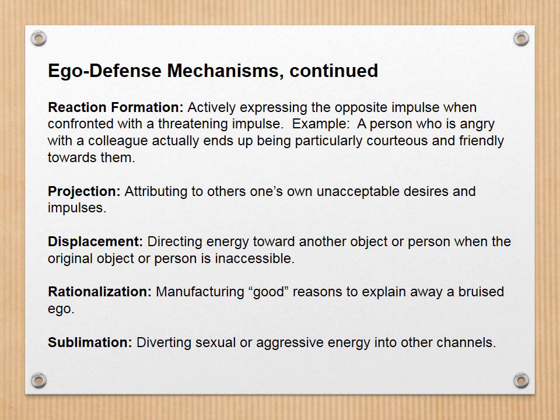Rationalization is manufacturing good reasons to explain away a bruised ego. For example, someone goes up to a person at a bar and asks them to dance. The person says no, and you walk back to your friends saying they have a boyfriend, they're mean, or whatever — you always come up with some reason why things didn't work out.